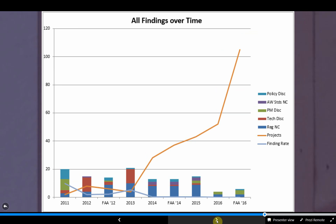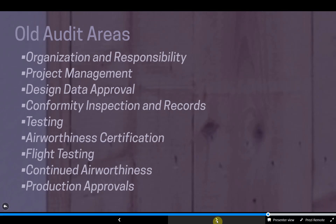Since becoming an ODA in January 2011, we have conducted six self-audits and the FAA has completed three DOIP inspections. The trending in findings for each review is going down, while the number of projects has increased significantly, so our rate of findings has decreased significantly over time. We seem to be growing into a healthier organization. Historically, self-audits have been structured to follow the guidance provided in the order for FAA auditors when they perform a Designated Organization Inspection Program, or a DOIP review.